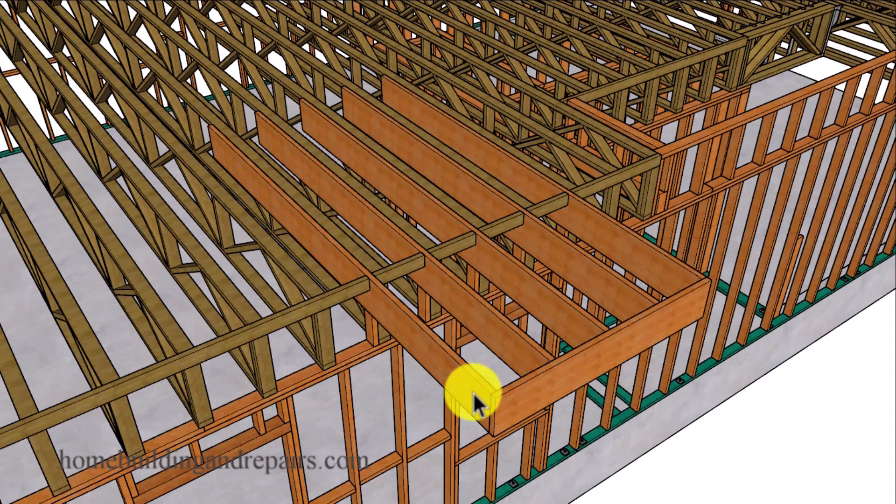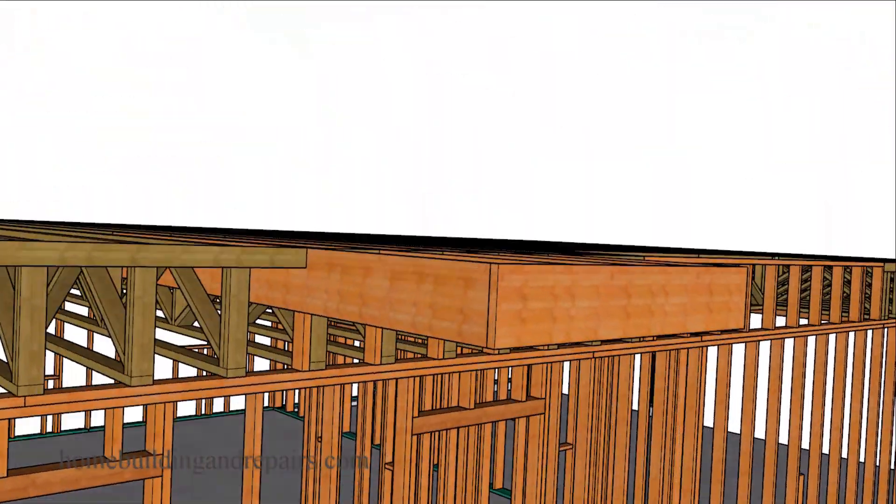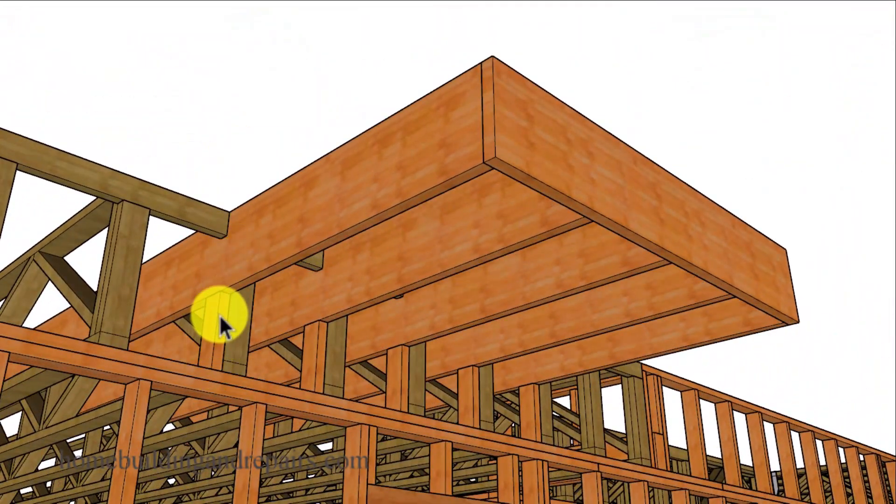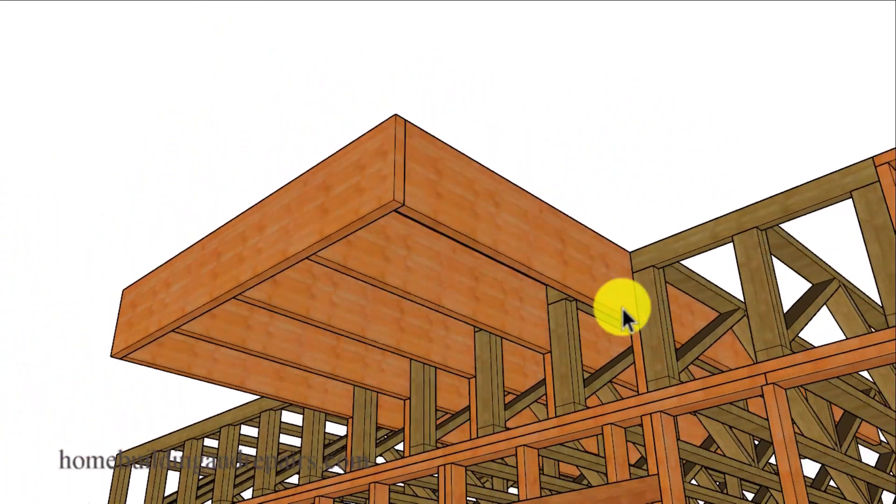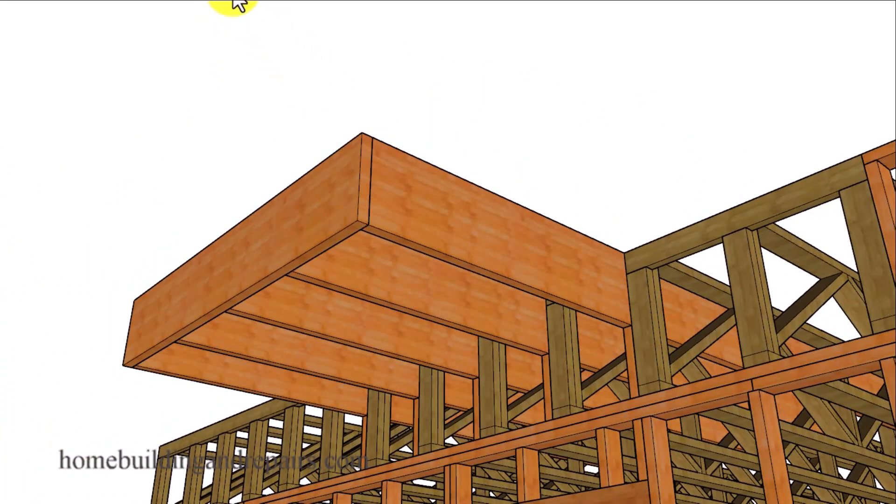With that said, always check with the floor truss manufacturer for the correct way to use their products. One of those methods might be something like this, where we have a cantilever deck that is the same height as the existing floor. I will have a support block underneath each one of the joists.